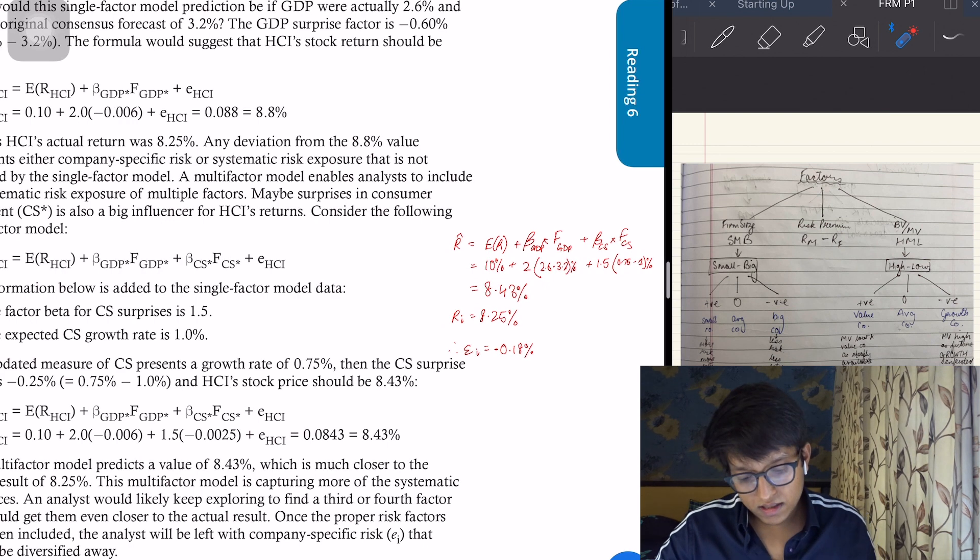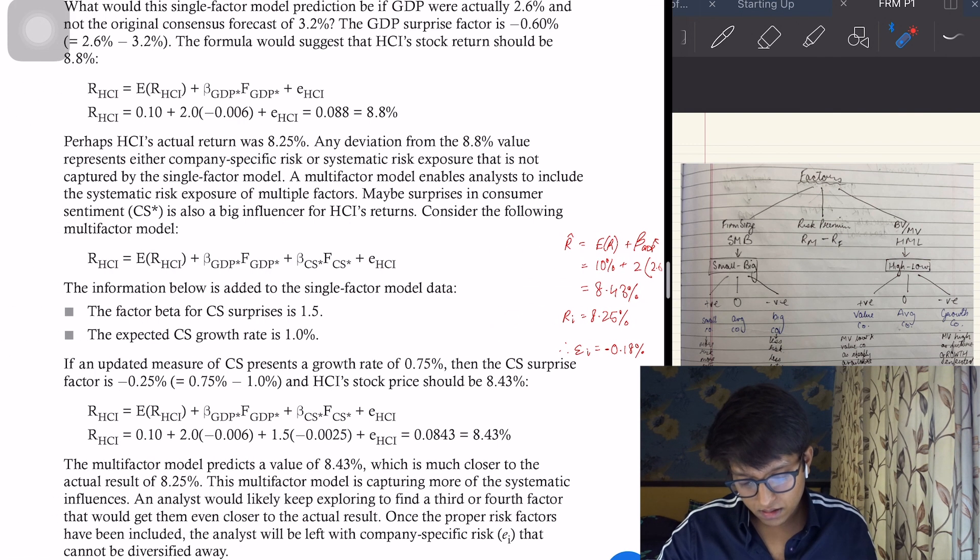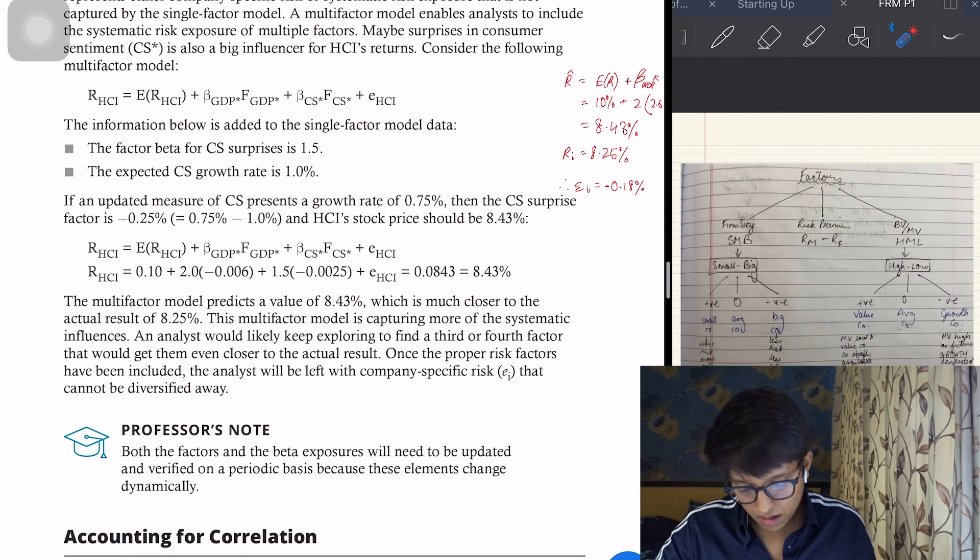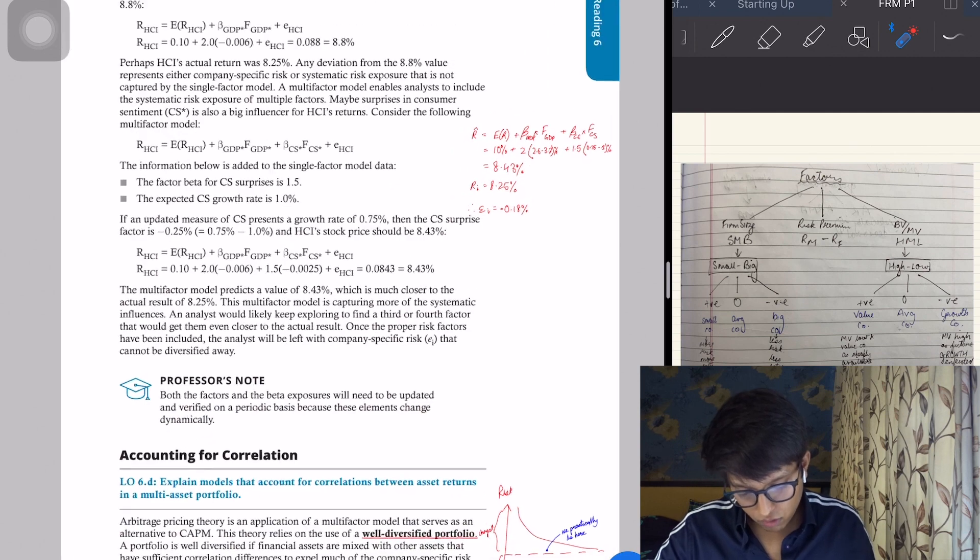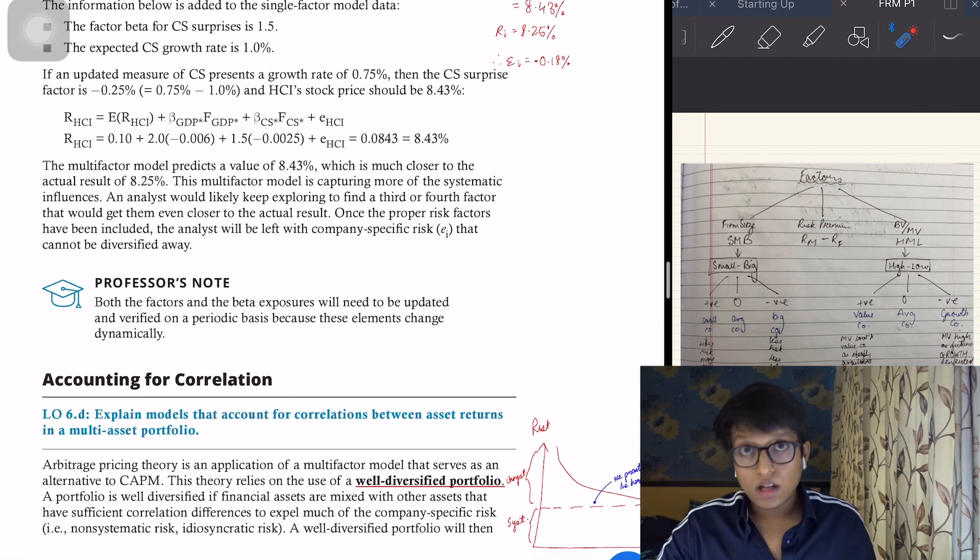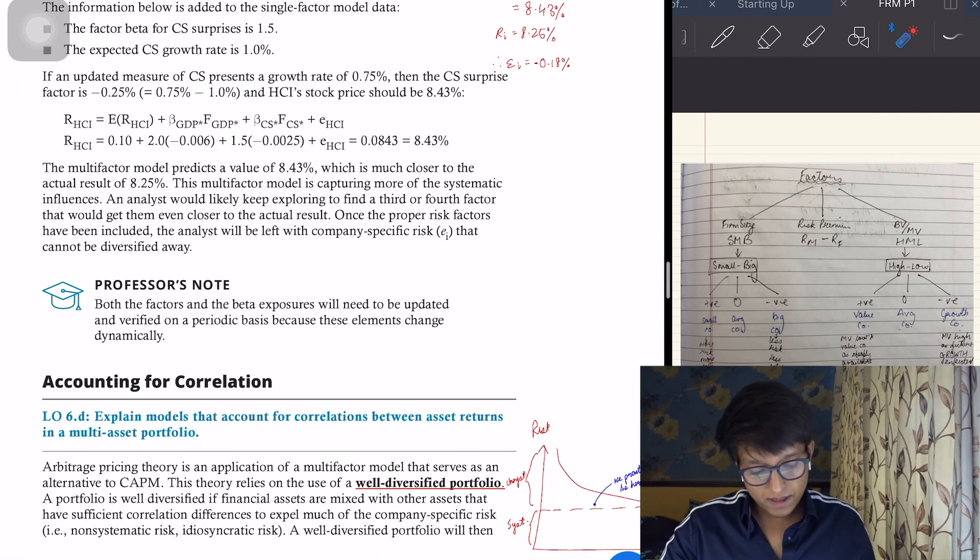What they've done is separately also calculated the error term, because in one way they got the total return, which came to 8.43%, and they subtracted it from some figure, that other figure that they got, and they got this systematic part as well, the unsystematic part as well. Just go through it. Accounting for correlation—just like CAPM, this says that there is a well-diversified portfolio.